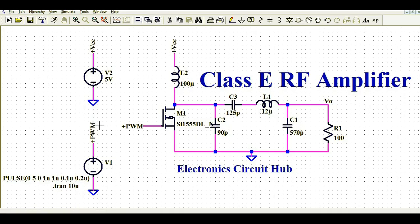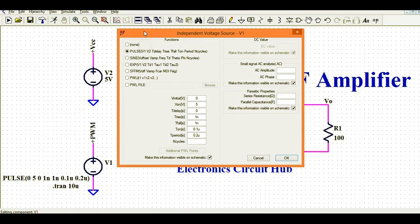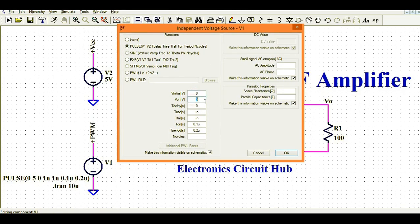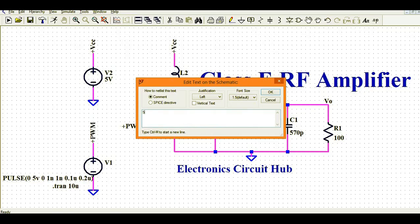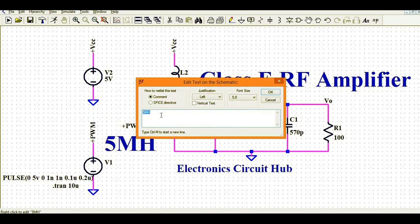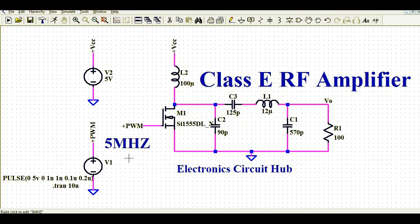You can see this MOSFET gate is driven by a PWM signal. Let me show you how you can design the PWM signal. So just right click on here. You can select the pulse, initial 0 volt here, you can see like 5 volt. Then rise time and fall time is 1 nanosecond. T on is 0.1 microsecond and T period is 0.2 microsecond. That means I'm driving this MOSFET with a frequency of 5 megahertz.